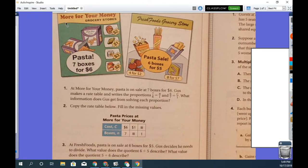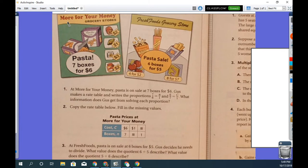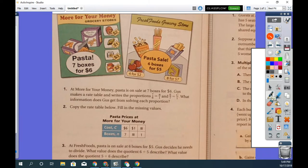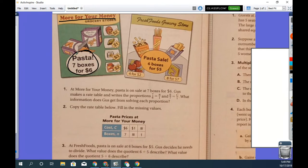Right here, maybe you don't see my arrow. More for your money. And they sell pasta, seven boxes for $6. And that's where we're going to start our problem.